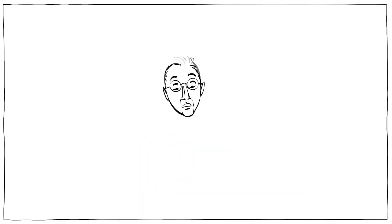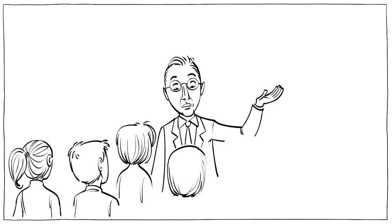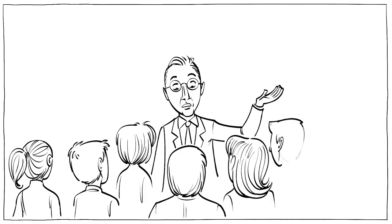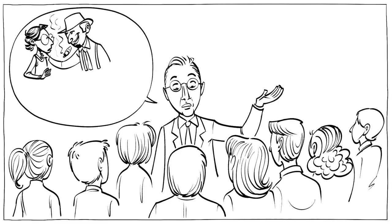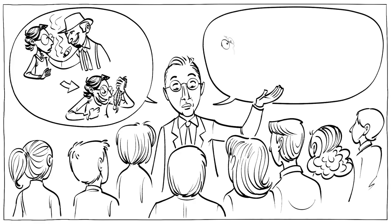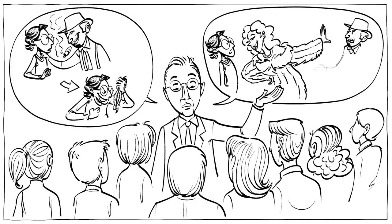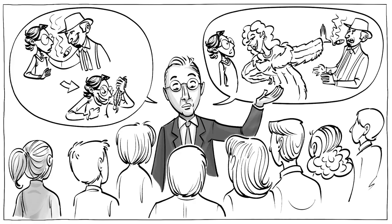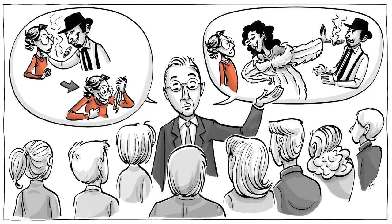Edwin Sutherland was an American sociologist whose work had a big impact on criminal policy. His theory recognizes that criminal attitudes can be learned socially. Consequently, they can also be unlearned. In other words, Sutherland helped us understand that kids like Robin can be rehabilitated.